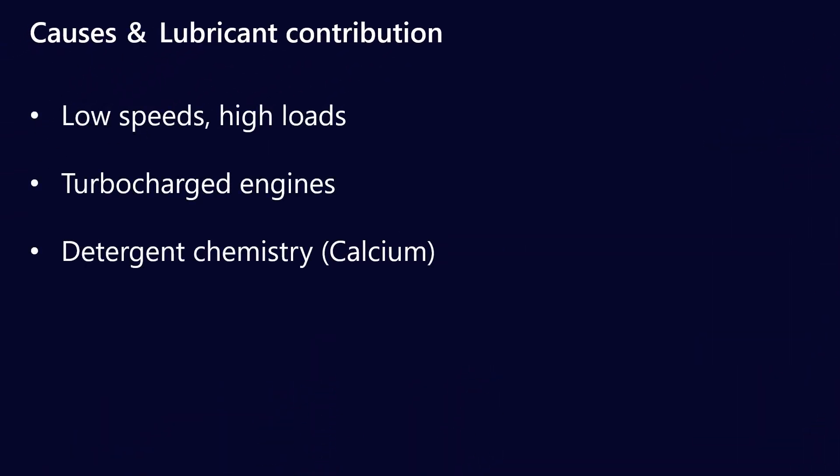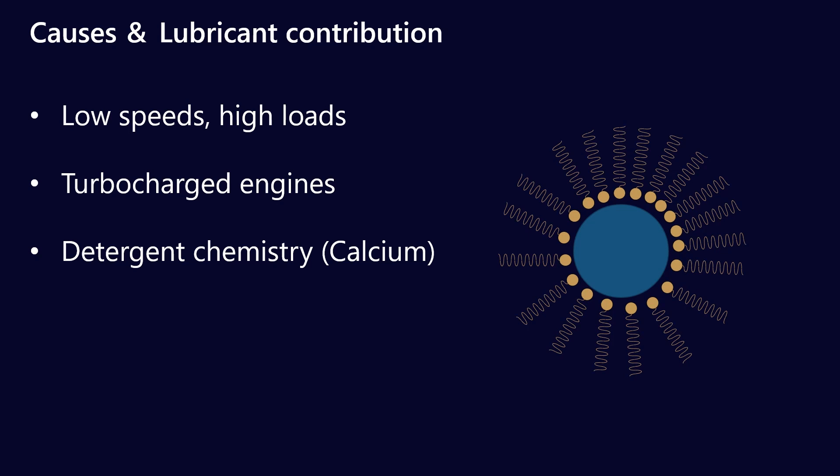Low speed pre-ignition has become a massive problem in the industry because it occurs in direct injection turbocharged engines, which have become so much more predominant because they are more efficient. So in a drive to make vehicles more efficient, we've downsized the engines and are putting much more fuel and air through a smaller space — that is effectively causing LSPI. We know that detergent chemistry has a part to play in that. Specifically, calcium detergents seem to make it worse. These form micellar structures and, if over-based, are called TBN molecules. These are starting to be replaced in a lot of new engine oil formulations with magnesium-based detergents.